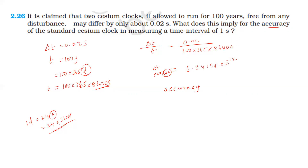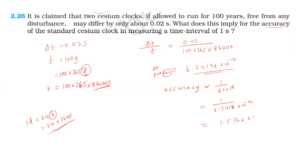Accuracy is the reciprocal of the fractional error. The reciprocal of 6.34198 into 10 power minus 12 is approximately 1.58 into 10 power 11. So the accuracy is of the order of 1 part in 10 power 11 to 10 power 12.